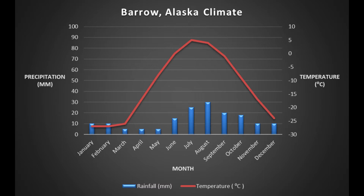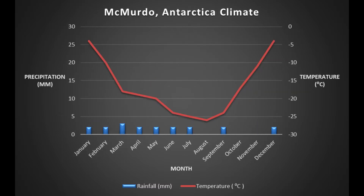When we look at McMurdo in Antarctica, we see a different picture. The temperature doesn't get above freezing — highs are around minus four degrees, whereas lows go down towards minus 25 degrees. Levels of precipitation in Antarctica are a lot lower, and what we tend to see in polar environments is very little precipitation throughout the year.